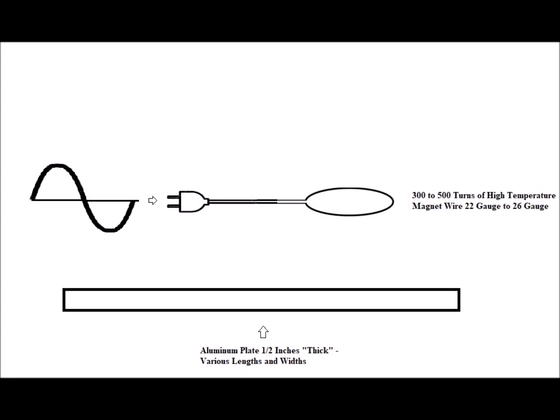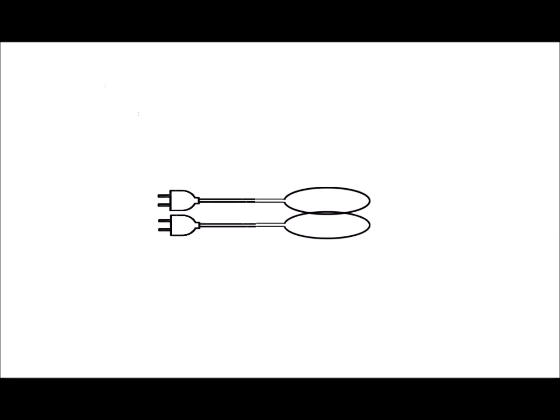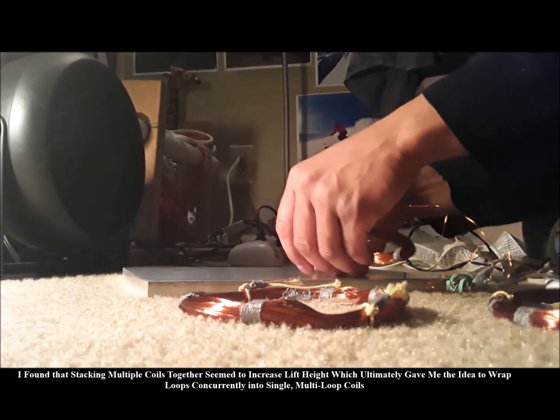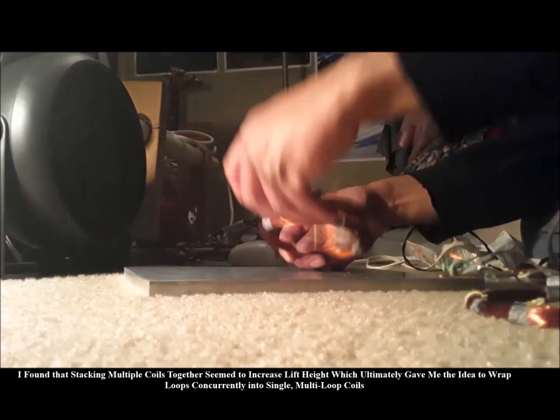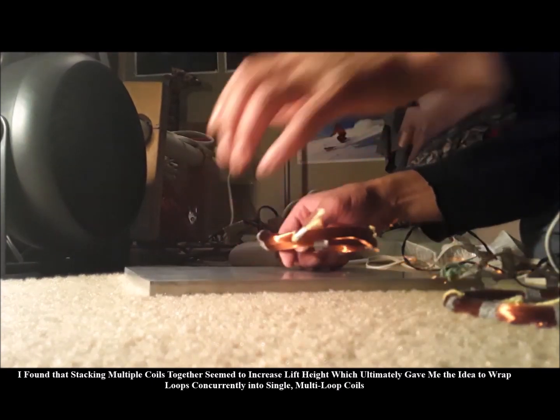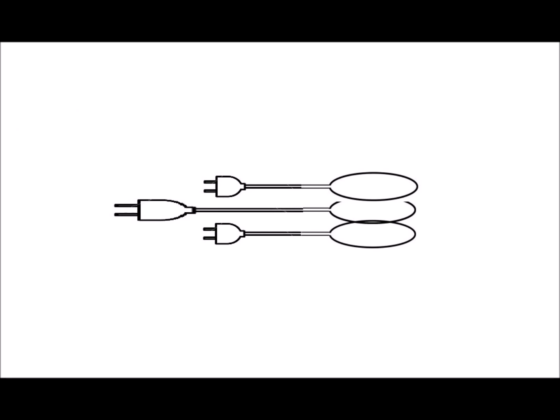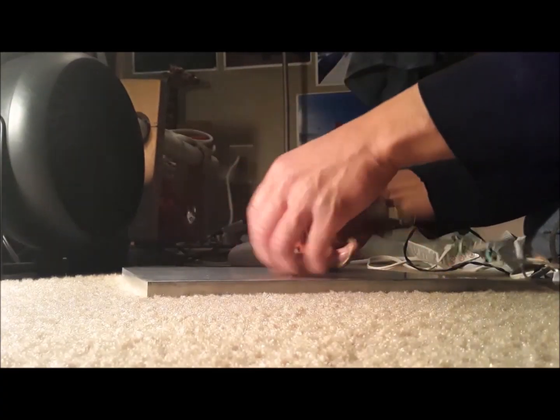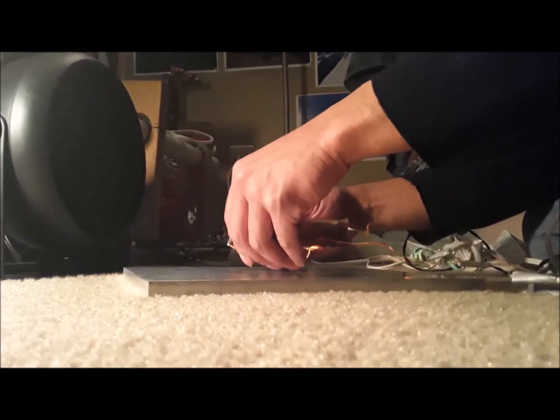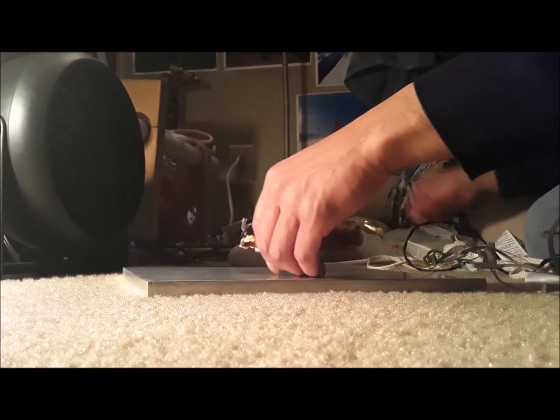I started off with single loop coils energized by a single plug into the household current. I then experimented with coils made of two loops wrapped simultaneously in parallel fashion, energizing each with a separate plug plugged into two separate outlets, finding a significant increase in flotation height and carrying capacity with this method. I then tried a coil made from three parallel loops again with three plugs secured into three different outlets. Again there was an increase in height and carrying capacity but not quite to the same degree.